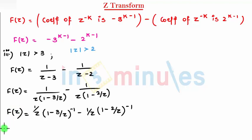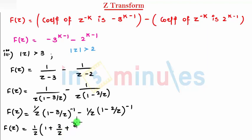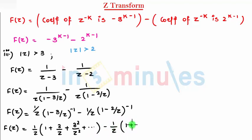So now let's open this series. f(z) — I get as 1 by z, and the series opens as: 1 plus 3 by z, plus 3 squared by z squared, plus dot dot dot, minus 1 by z, and here: 1 plus 2 by z, plus 2 squared by z squared, plus dot dot dot.